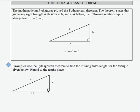This is a right triangle, which means that the sides and the hypotenuse, which is the side directly across from the right angle, will fulfill the relationship a squared plus b squared equals c squared.